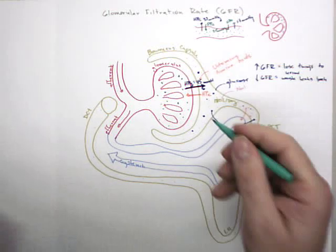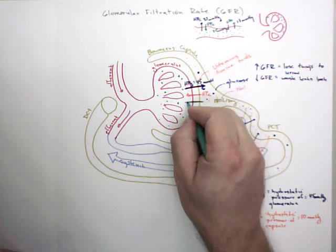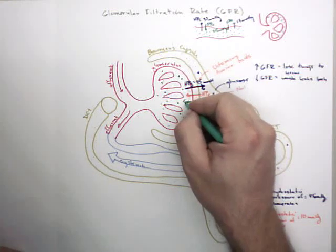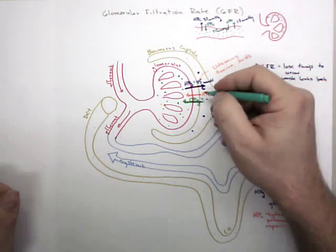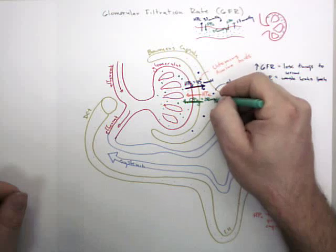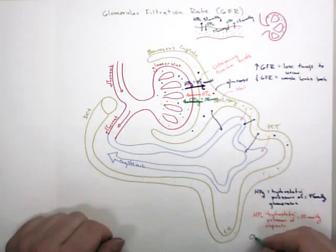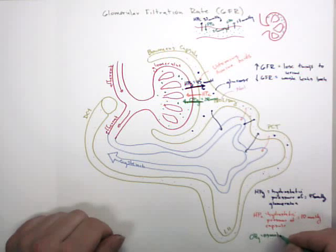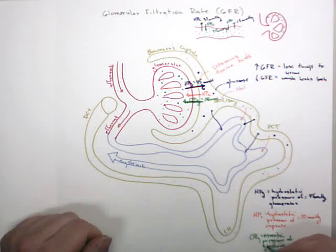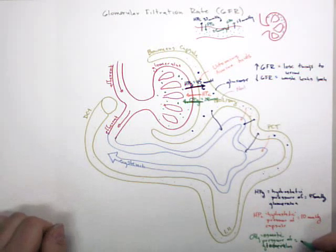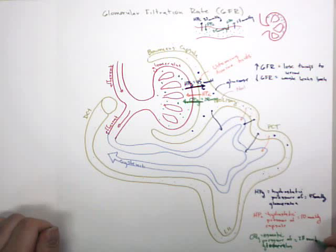The other pressure we have also pushes opposite of HPG, and that's something called OPG, osmotic pressure of glomerulus. This is equal to about 28 millimeters of mercury.